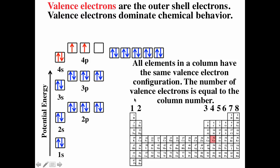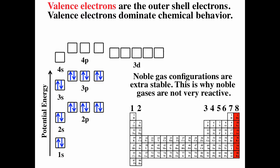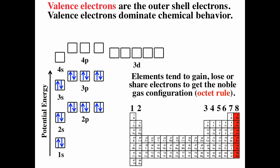The alkali metals have one valence electron, alkaline earths have two, chalcogens have six, and halogens have seven valence electrons. The noble gas configuration is extra stable because it's composed of full subshells, which is why the noble gases are not very reactive. Elements tend to gain, lose, or share electrons to get noble gas configuration — this is referred to as the octet rule, because all noble gases except helium have eight valence electrons.